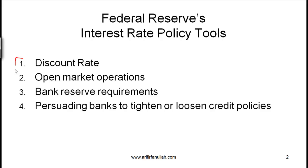The tools used more often are the discount rate and open market operations. The discount rate is the rate at which the central bank makes short-term loans to commercial banks. Open market operations refers to the buying and selling of treasury securities by the Fed in the open market, and by controlling the number of securities in the open market the Fed can control short-term interest rates.